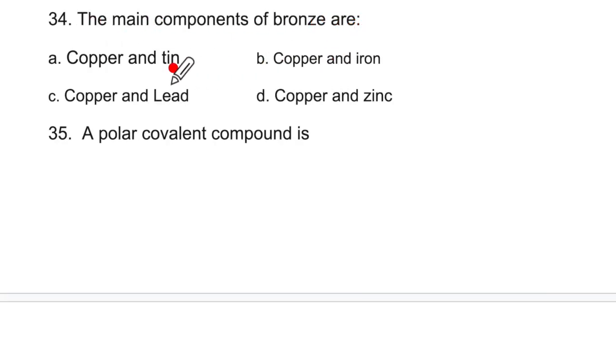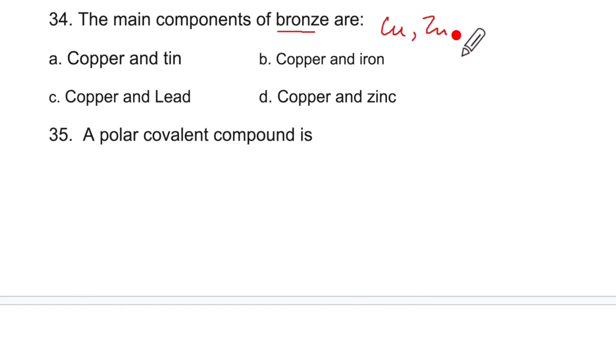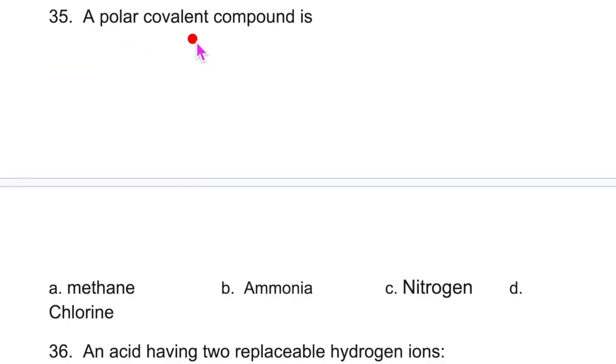The main components of bronze are copper, tin, copper, zinc. Bronze is made of copper, zinc and tin. Copper and zinc in bronze zinc is only 1%, but the tin is about 19%. So the main ones are copper and tin. A polar covalent compound. This is non-polar, this one is polar, chlorine is non-polar, methane electron pairs are equally distributed. But for ammonia they are unequally shared. So ammonia is the correct option.